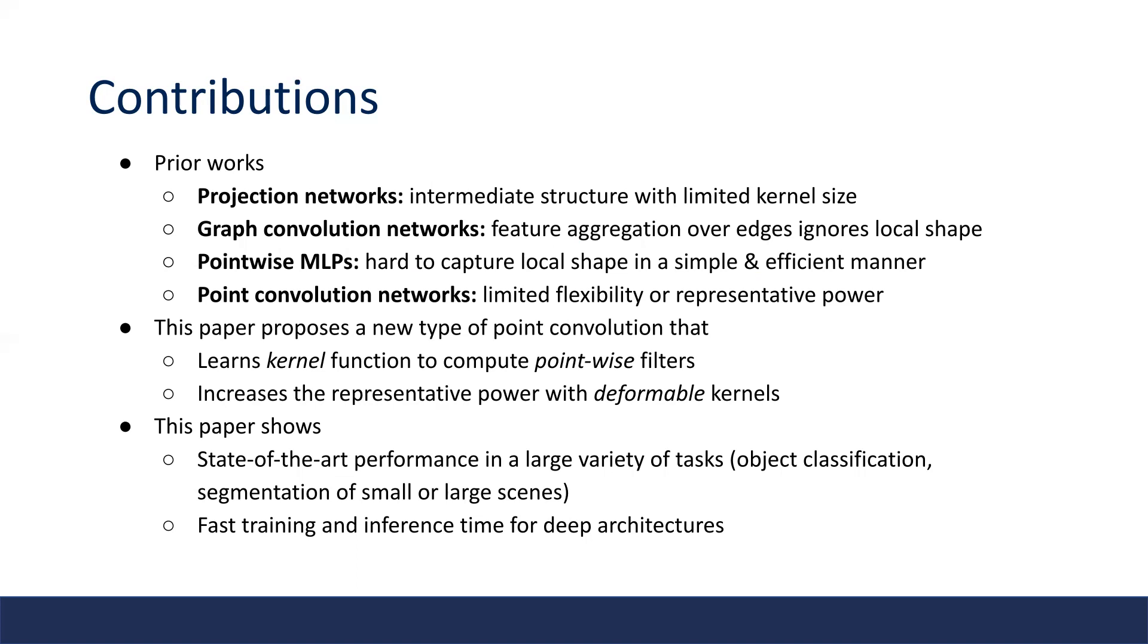Graph convolutional networks aggregate information over edges which ignore the local surface defined by the neighbors. Pointwise MLPs are hard to capture local shapes in a simple and efficient manner, and recent point convolution networks suffer from limited flexibility or representative power.